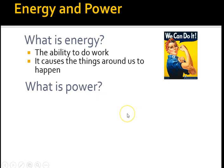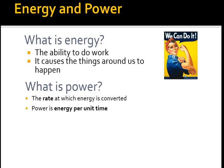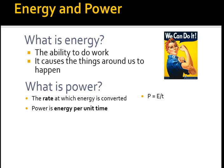Now on to power. Power, as opposed to energy, is the rate at which energy is converted — you can think of it as energy per unit time. The formula is: power equals energy divided by time. Power and energy are related, but they are two very different things. Energy is a discrete amount you have, while power is the rate at which you're converting energy from one form to another.